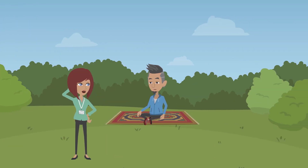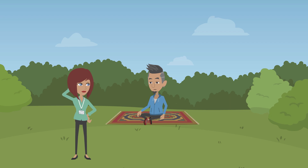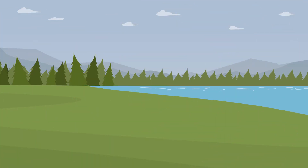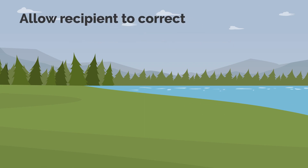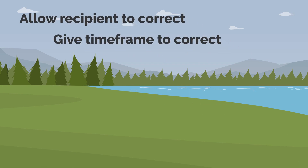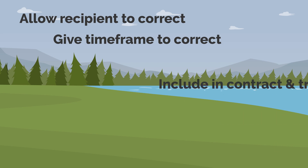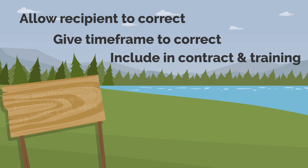What if I do all that and find out that they aren't doing what they are supposed to with the grant money? Wise question indeed, Grasshopper. We call that non-compliance. When there is non-compliance, you must take action to get the recipient to take corrective steps. Give them a timeframe to correct the issues. All of that should be spelled out when the grant is awarded in the grant contract and training you provide to grant recipients.